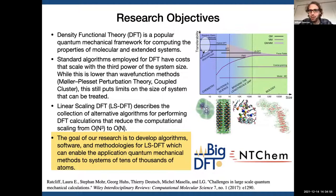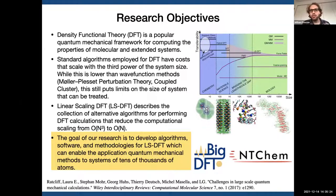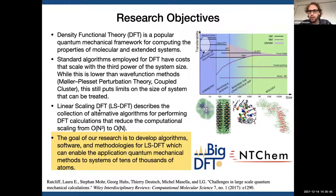We are working on density functional theory, which I think you all are quite familiar with. One of the reasons why DFT is such a popular method is that it has a really nice trade-off between computational accuracy and computational cost. Nonetheless, there are times when the system is just too big, because with standard algorithms the cost grows with the third power of system size. So people have been developing alternative algorithms whose costs grow linearly with system size — we call these linear scaling DFT.